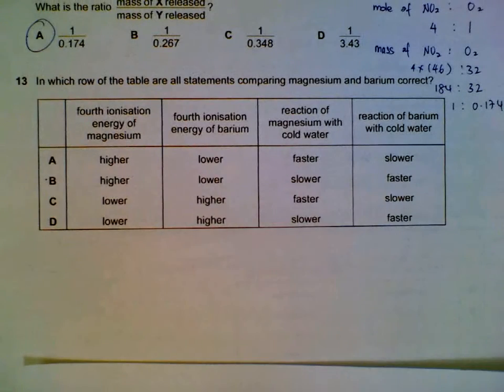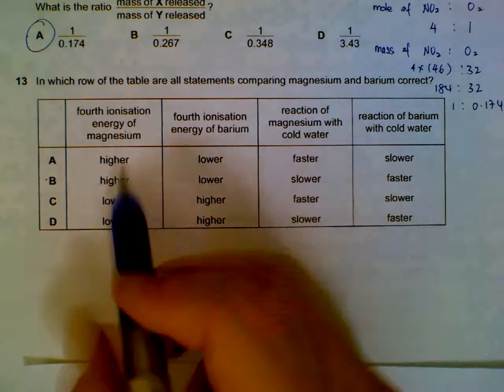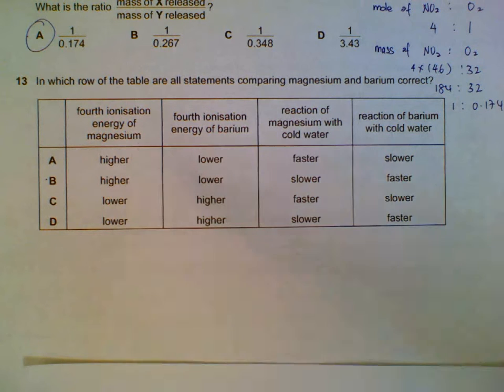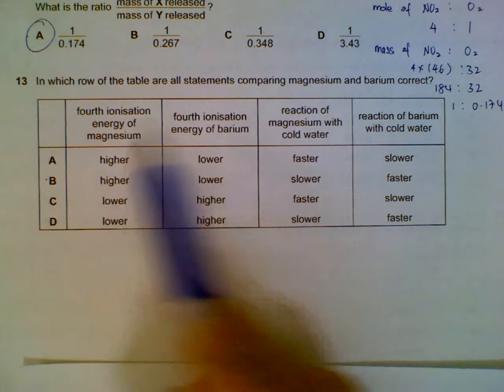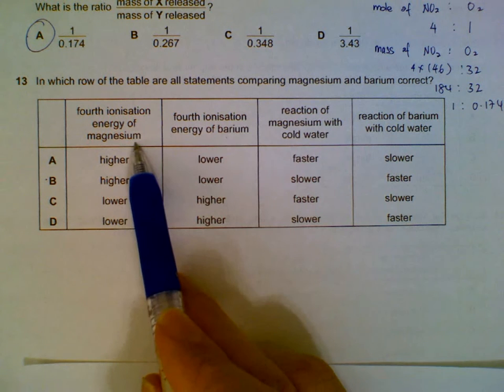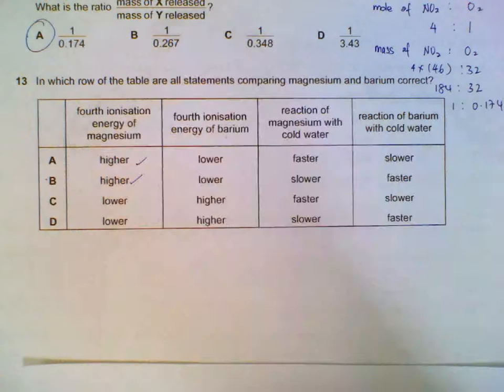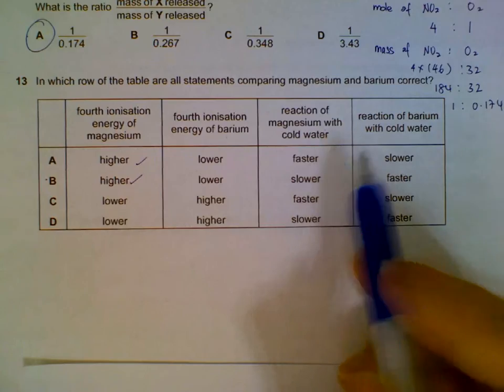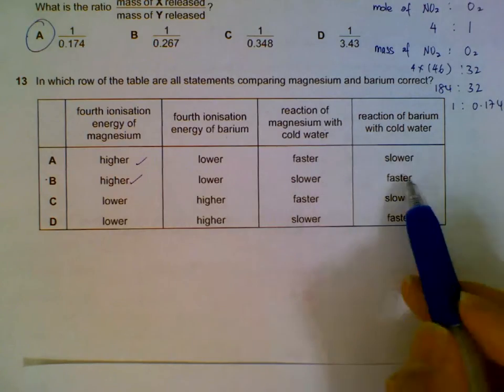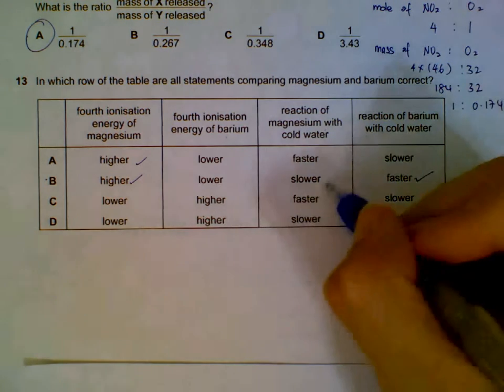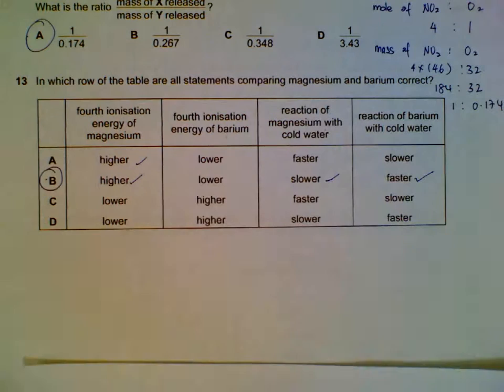Number thirteen: comparing group 2, magnesium versus barium. For magnesium, removing the fourth electron means removing from a shell closer to the center compared to barium, so higher ionization energy—harder to remove from magnesium. For the reaction with cold water, since the valence electron is further away for barium, it's more easily lost, so barium is more reactive than magnesium. Answer is B.